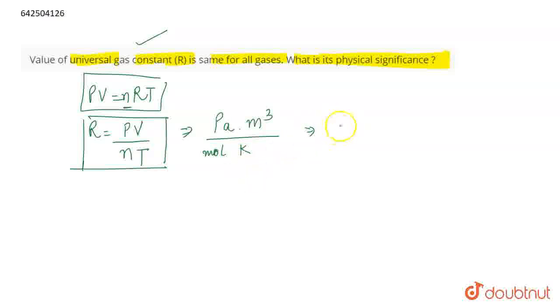So what are the units of R? Pascal meter cube per mole per Kelvin. Now, pascal meter cube can also be written as joule. So this can be written as joule per mole per Kelvin.